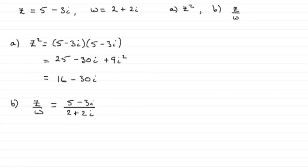And for something like this, we've got to multiply top and bottom by the complex conjugate of 2 plus 2i, and that is to multiply top and bottom by 2 minus 2i, so 2 minus 2i over 2 minus 2i.